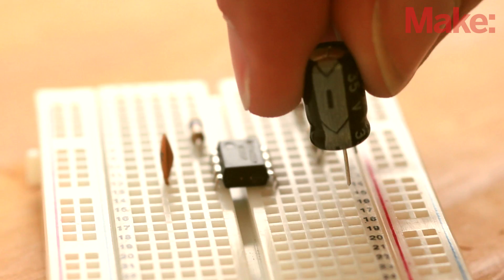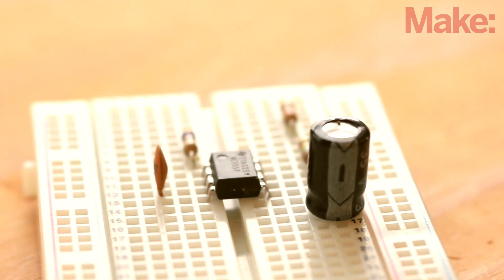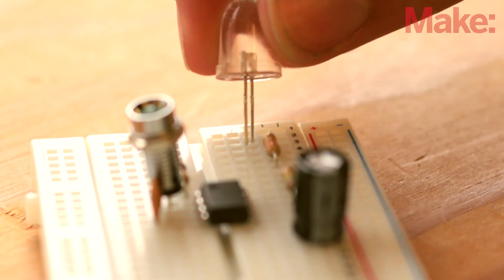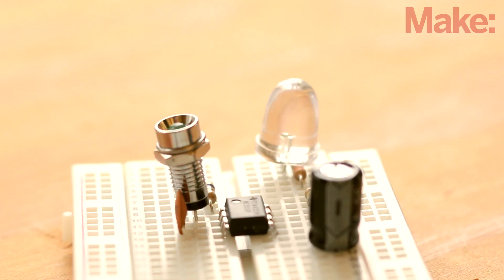Now you can add the electrolytic capacitor, green LED and red LED. These components are all polarized, meaning they have a specific negative and positive lead. Be sure you orient them properly.